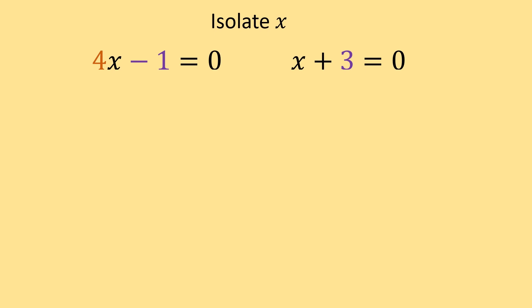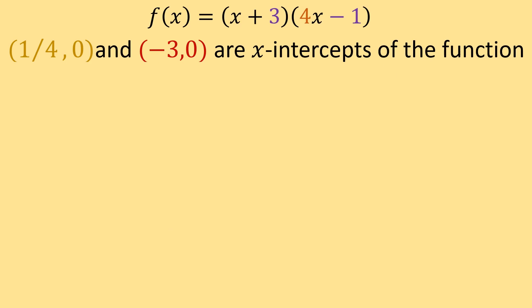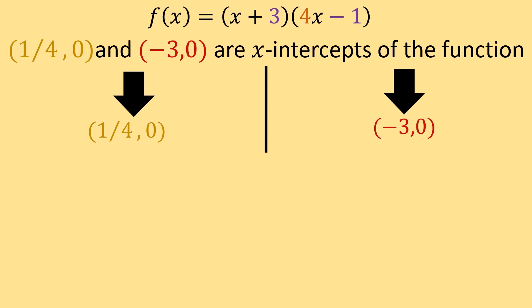For 4x minus 1 equals 0, add 1 to both sides. For x plus 3 equals 0, subtract 3 from both sides. That gives us 4x equals 1 and x equals negative 3. Dividing by 4 gives x equals 1 fourth. The difference between the function and the equation is how these values become our answers. We put each x value into the x position of a coordinate with y equals 0 to represent an x-intercept. Our two x-intercepts are (1/4, 0) and (negative 3, 0).